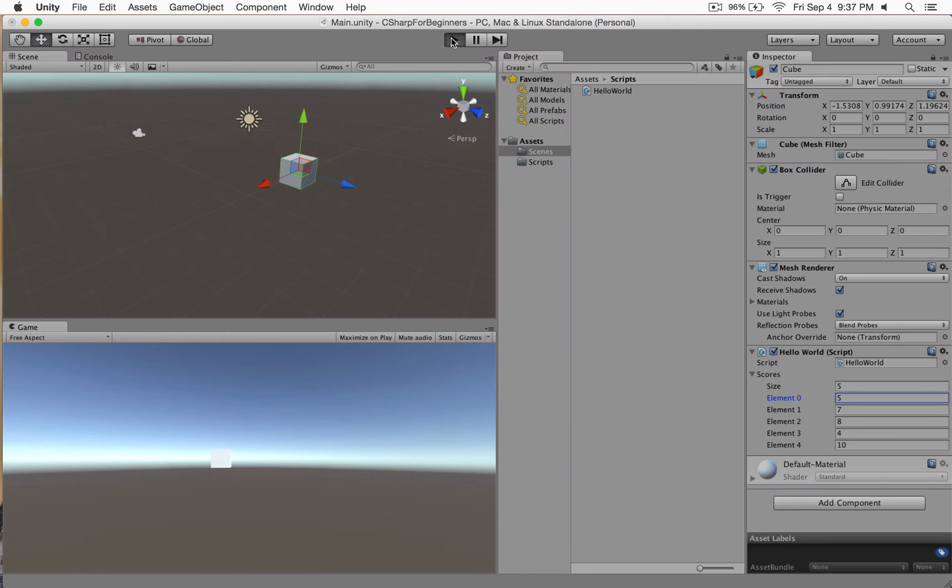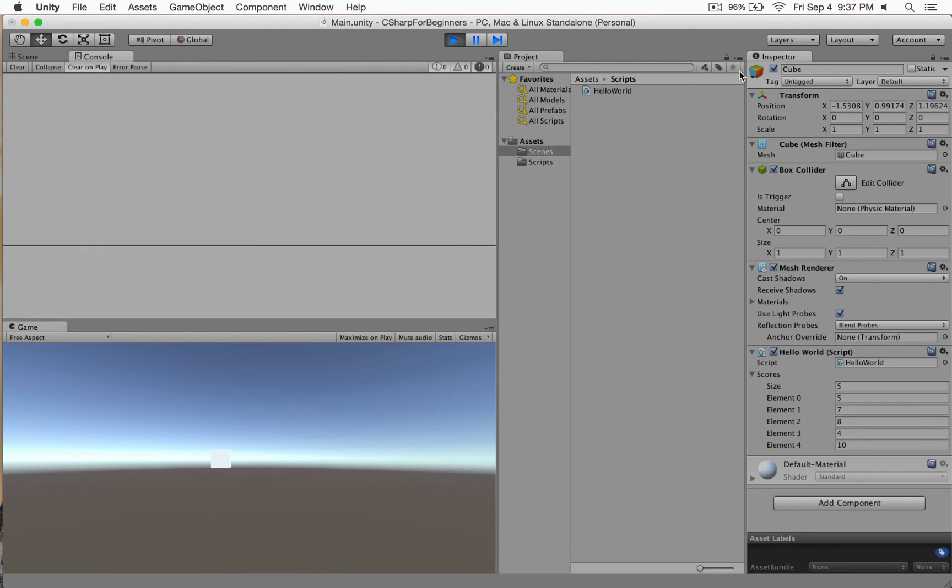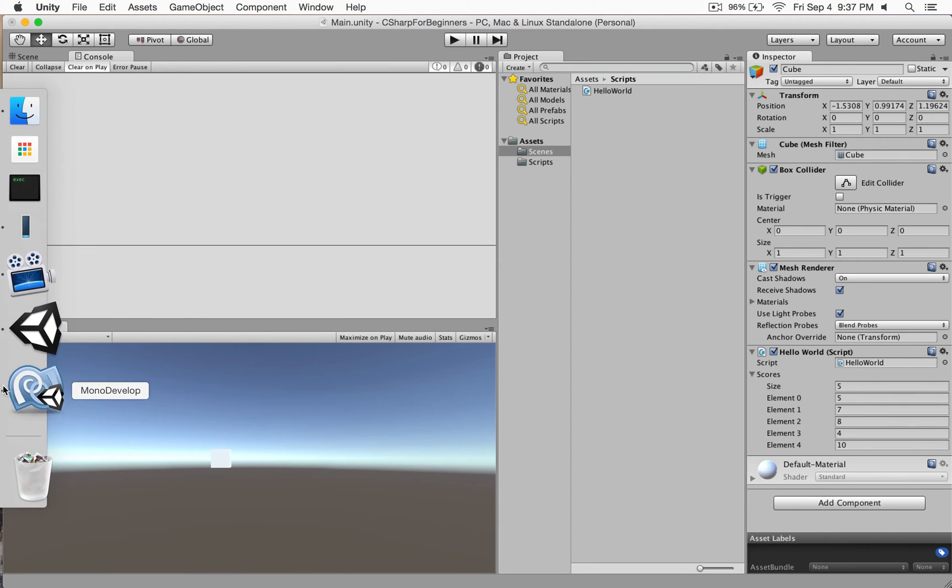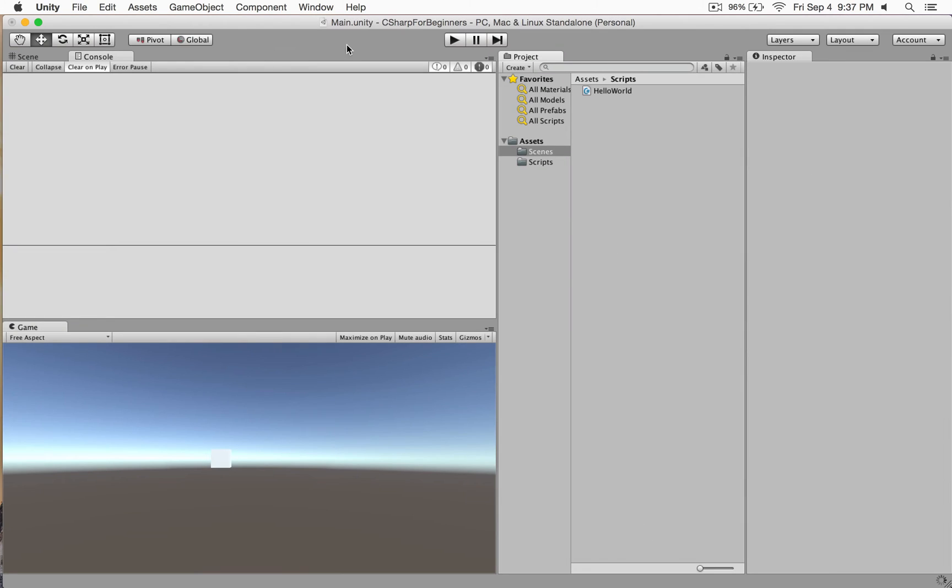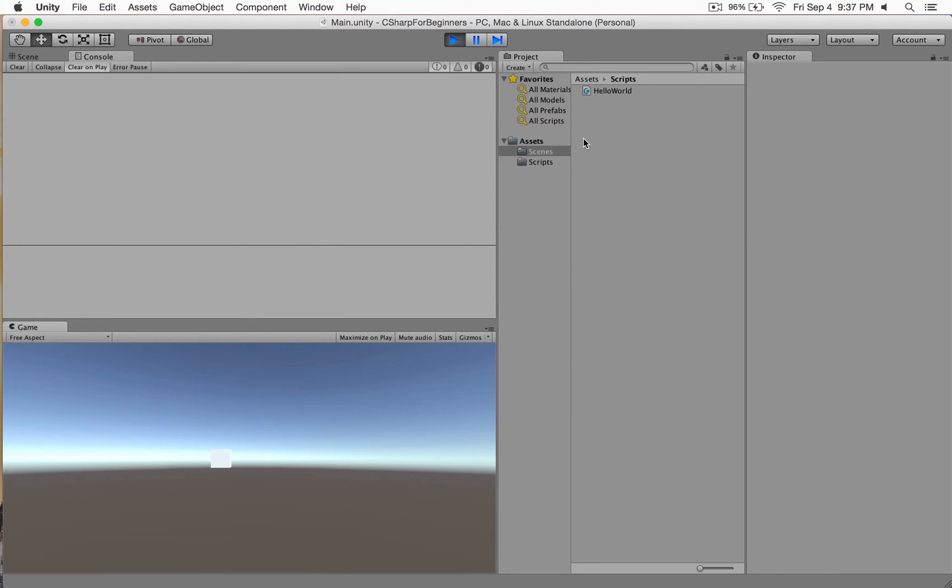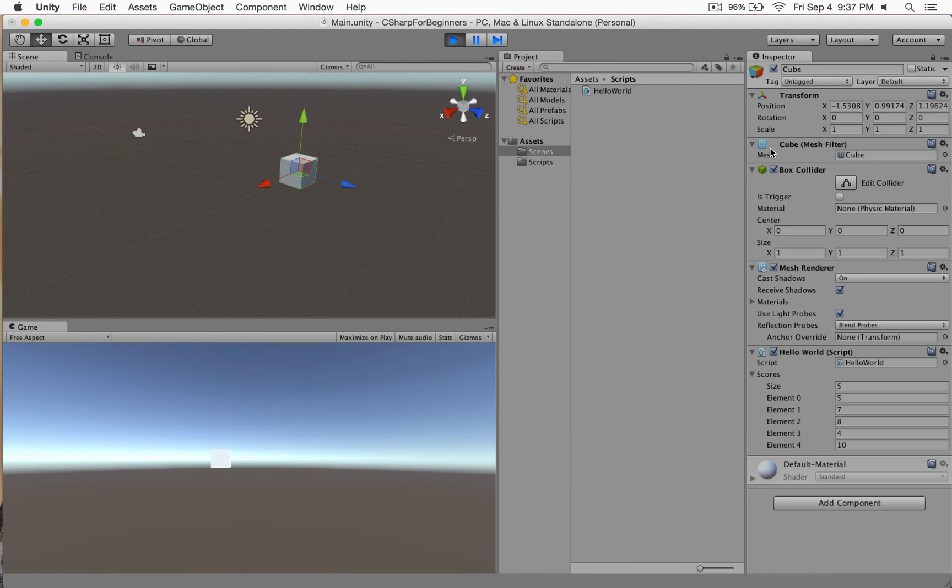And there's our scores. Now I'm going to start. Then I'll switch open to the console and now disable this cube. What happened here is that our code didn't run. And this is a typical error that you will encounter when working with Unity.